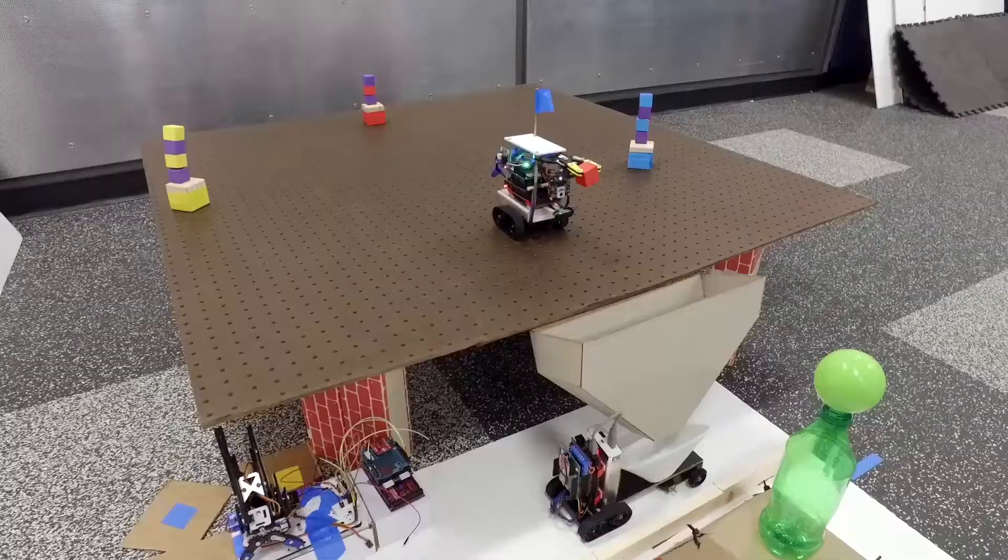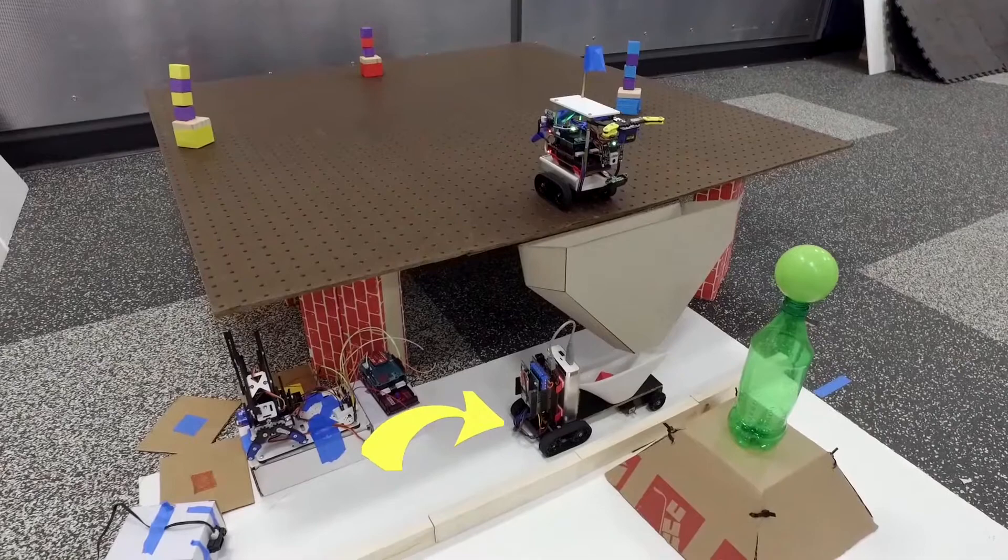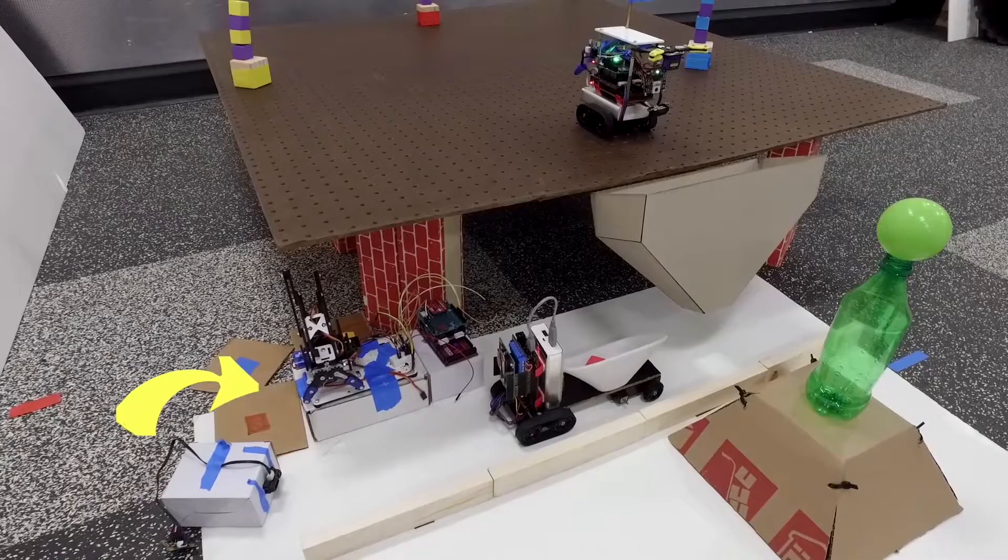After grabbing the object, it will go toward the green ball, which represents our unloading area. After Rambo reaches the destination, it will drop the cube into our second rover through the funnel. Then it will transfer the object to the classification area.